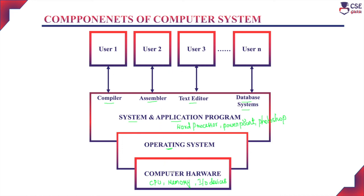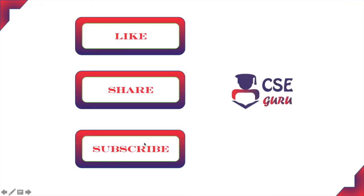In summary, the base is the computer hardware, next is the operating system, then system programs on the operating system side and application programs on the user side. Finally, the user accesses applications with the help of system programs. This is the abstract view of the components of a computer system. Thank you for watching this video.